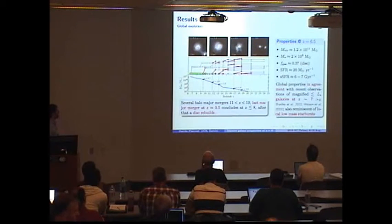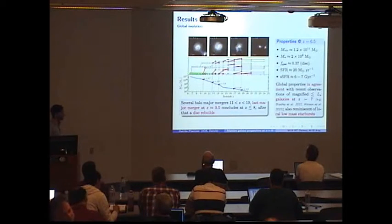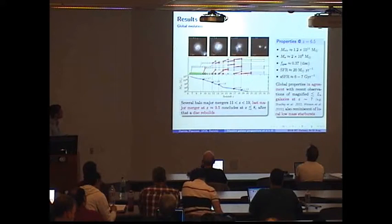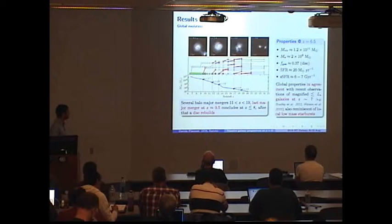So, these figures summarize the global evolution of the galaxy, of the main halo, which undergoes a few major mergers at early time, with the last one happening at about redshift 9, after which the central galaxy rebuilds a rotating gas-rich disk, which is eventually perturbed by a smaller companion a bit later.